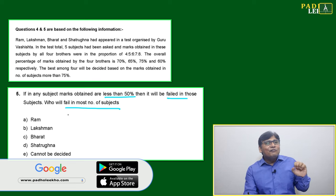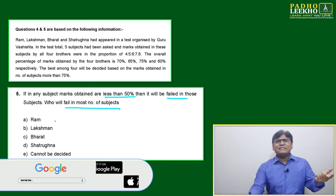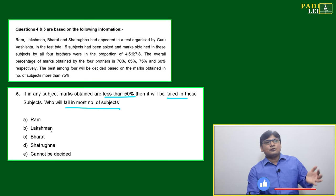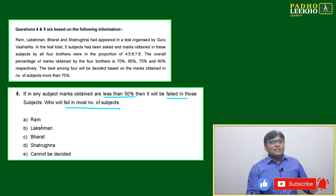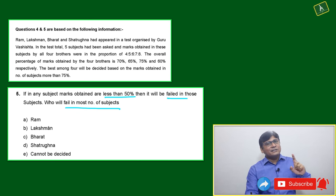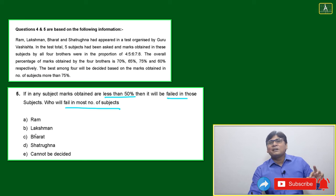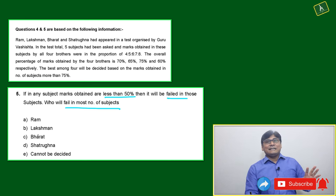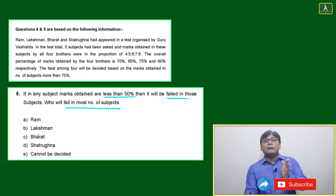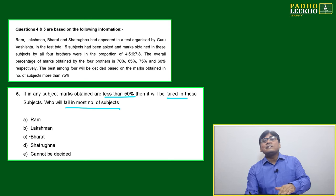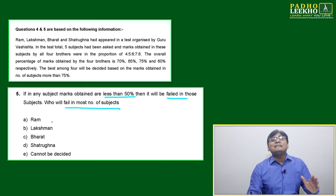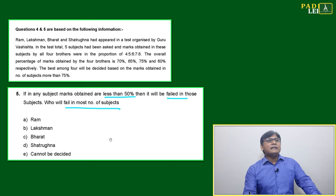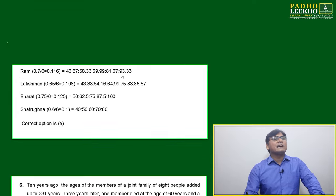Same way here, don't think Ram cannot be the answer or Ram cannot fail in the most number of subjects. As a matter of mathematics, Ram also can be, Lachman also can be. But one thing is sure based on the data: Bharat is at the top, getting 500 percentage overall and scoring 75 or more in three subjects.